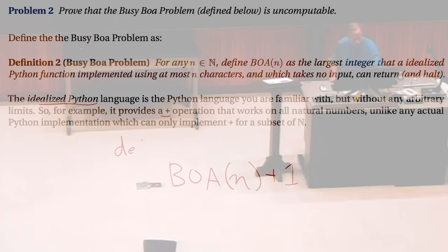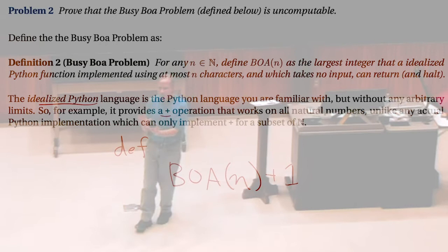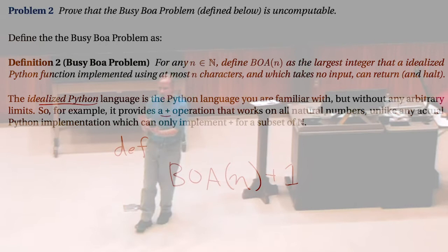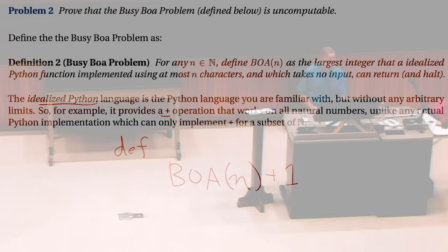Getting a contradiction by writing Python code is a lot shakier than getting a contradiction by writing a Turing machine, because it assumes everything in Python exists. But we're using idealist Python, which does exist — well, it doesn't really exist, but in idealist Python, we can assume everything we expect exists. So we're going to have some contradiction.